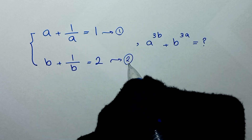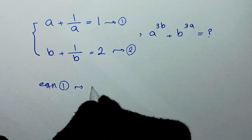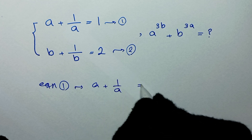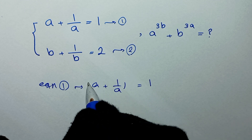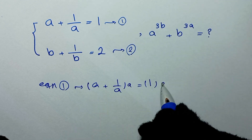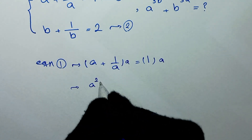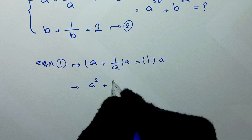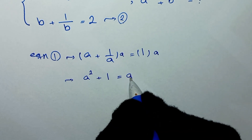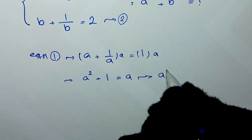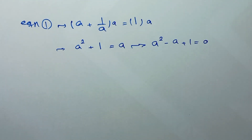From equation one, a plus one over a is equal to one. We multiply both sides of this equation by a: a times a is a squared, and one over a times a is one, equal to one times a which is a. We take this a to the other side and it will be a squared minus a plus one is equal to zero.